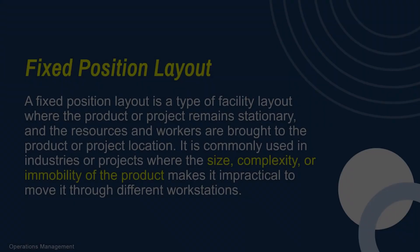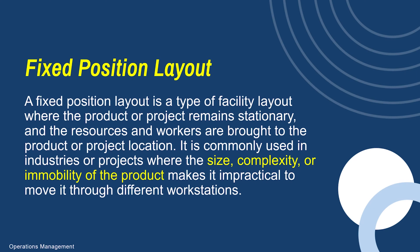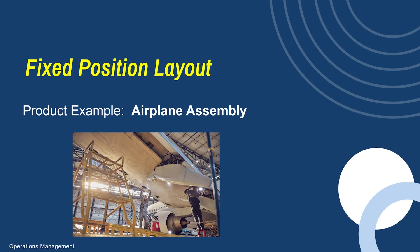Another layout you can have is what we call a fixed position layout. This is a layout where you just need huge space, or you're building a large item — for example, the airplanes we fly in are being manufactured somewhere. A fixed position layout is beneficial because of the size of the product you're producing, so in some instances a very large building with a fixed position layout is necessary to produce your product.